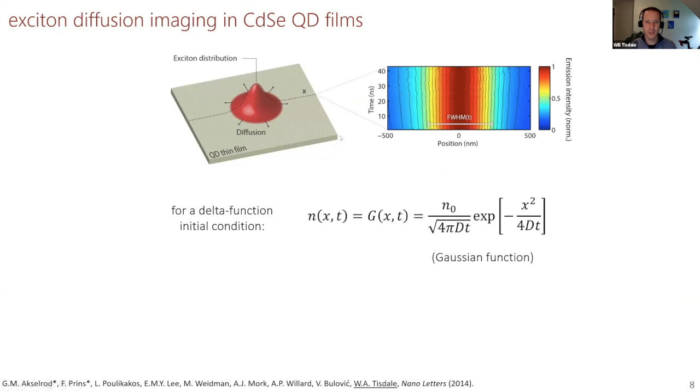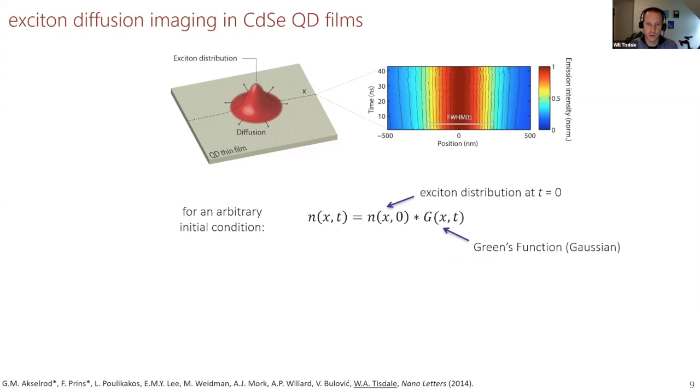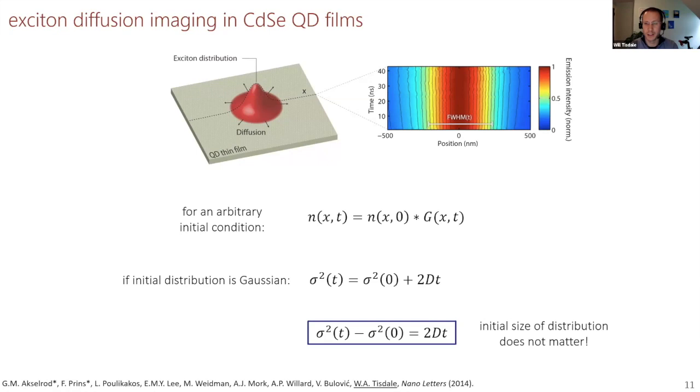So what does that analysis look like? If you had some delta function initial condition with infinitesimal spatial precision, the time-dependent distribution would be a Gaussian function whose width increases in time. And what we realized is that you could actually use this same approach to model any arbitrary initial condition. Any distribution at any time t can be expressed as a convolution of any arbitrary initial excitation distribution with the Green's function solution, in this case a Gaussian. If your initial distribution is also Gaussian, then the math gets particularly easy. The variance at some time t is just your starting variance plus a term that grows linearly in time due to exciton diffusion. And really what you want to be looking at is the change in the variance of the distribution, otherwise known as the mean squared displacement.